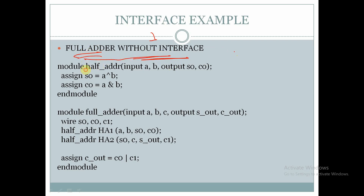Here we are declaring a module called half adder and we are giving the signals a, b as input and s0, c0 as output. We are assigning the output s0 as a XOR b and assigning c0 as a AND b, and here we are ending the module.